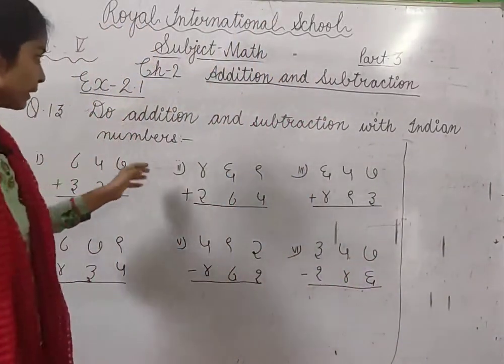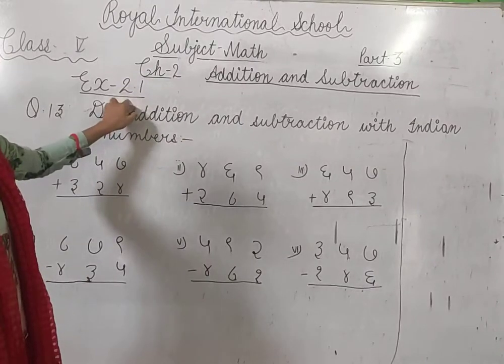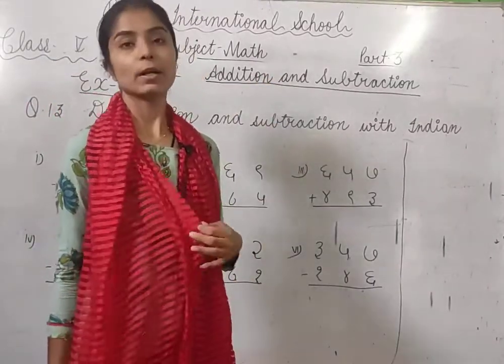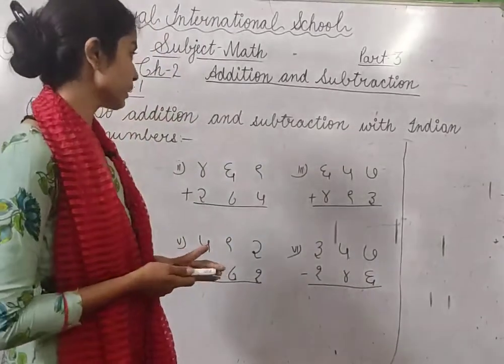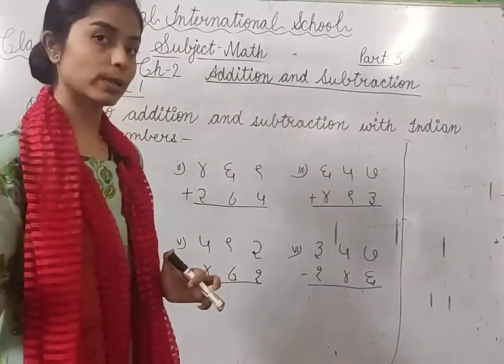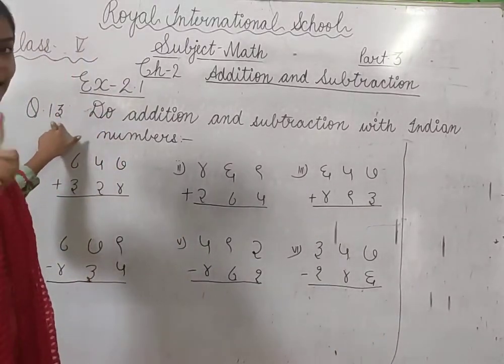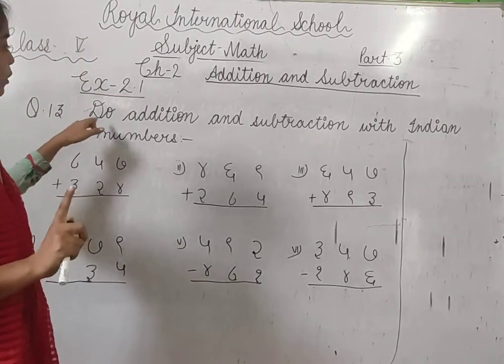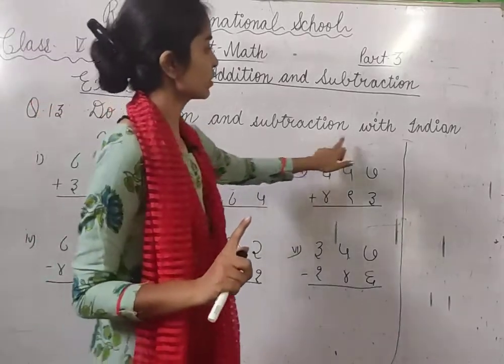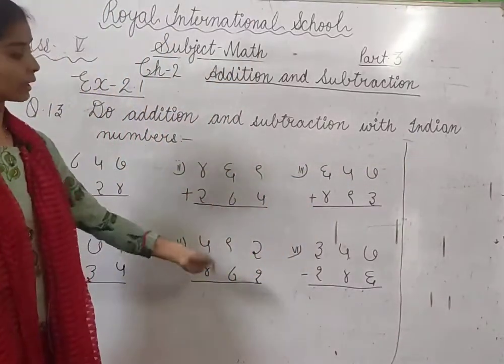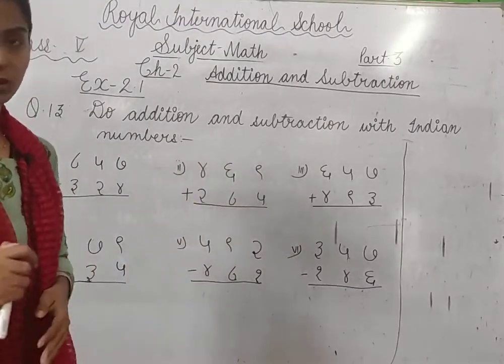We had already started Exercise number 2.1. Part 3 of this exercise. Part 2 mein hum logo ne questions kar liye the. Till question number 12 hum logo ne last 2 parts kar liye. So now question number 13. This is last question of this exercise. Do addition and subtraction with Indian numbers. Indian numbers ke through hume addition and subtraction karna hai.